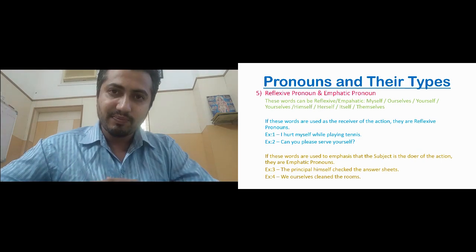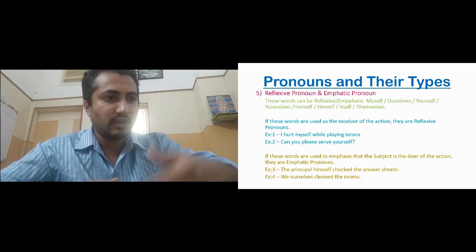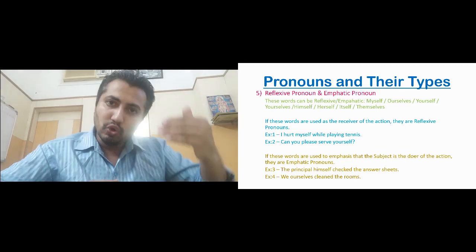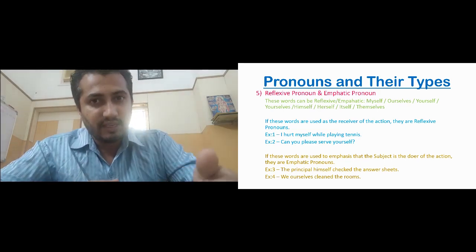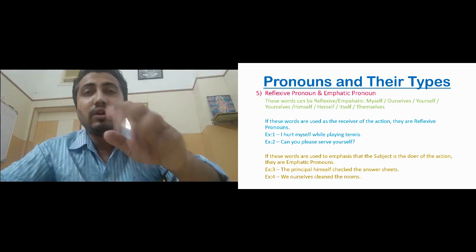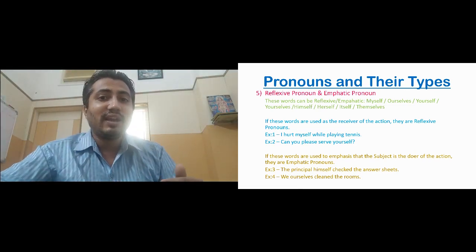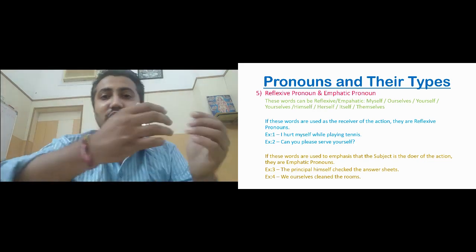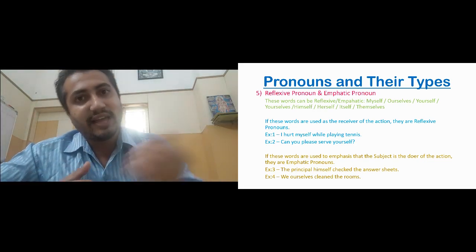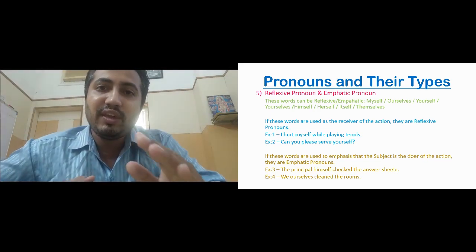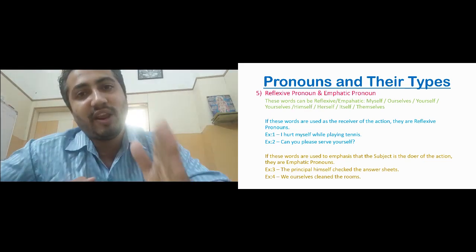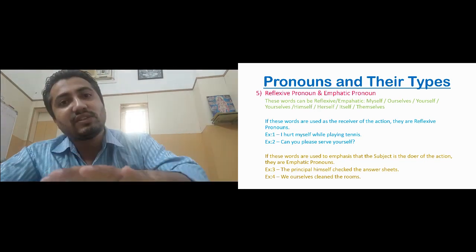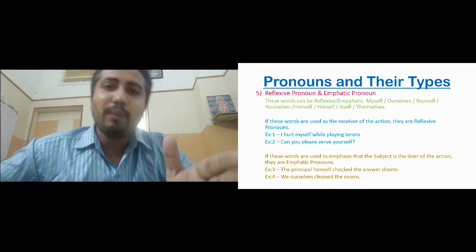So to repeat: if the self-pronoun is the receiver of the action — if it is the object of the sentence — then it is a reflexive pronoun. Now let us understand emphatic pronouns. Emphatic pronouns are when these self-pronouns emphasize or give importance to the fact that the subject itself is the doer of the action. It is emphasizing that the subject only performed the action. That is why it is called an emphatic pronoun.